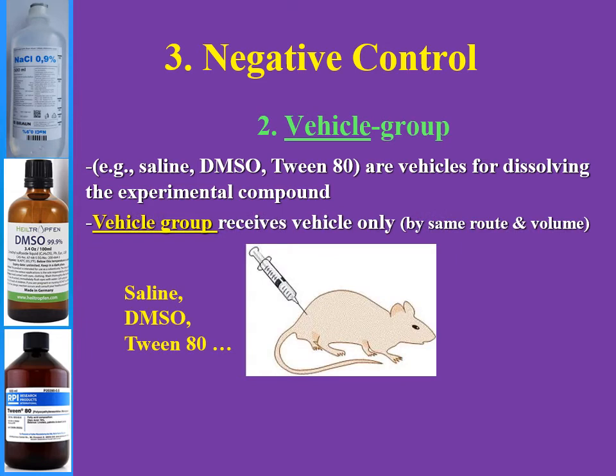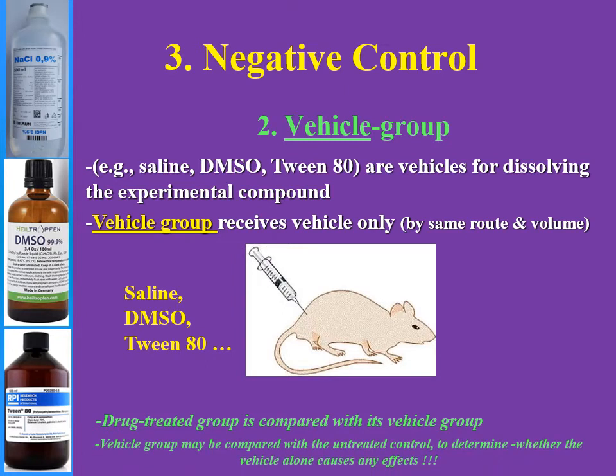So if we have any group that receives a drug or substance dissolved in vehicle, we should have a vehicle group that receives only vehicle by the same route and same volume. This group is used to be compared with the drug-treated group. The effect of the drug is measured in comparison to this group. We can also compare the vehicle group with normal or naive rats to determine whether the vehicle itself has any effect on our outcome measures or not. But in reality, this is not used in most studies.